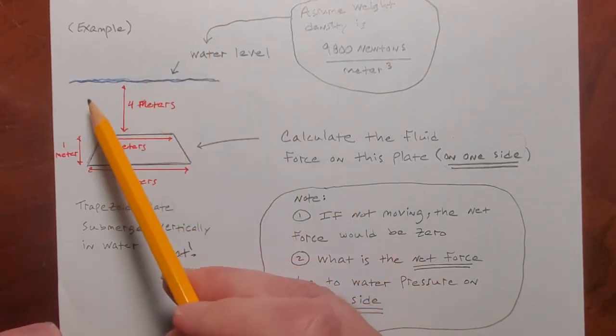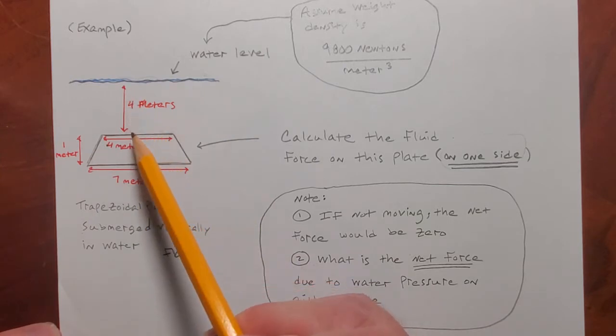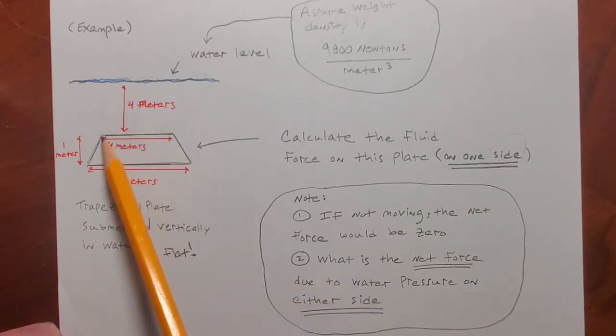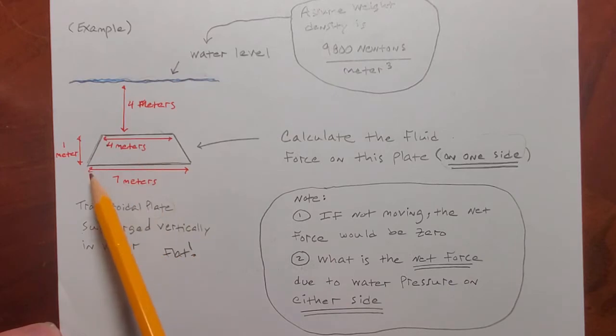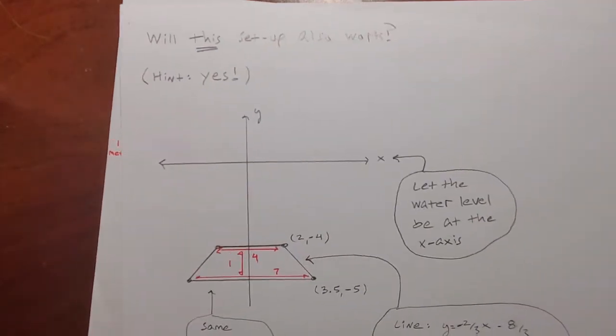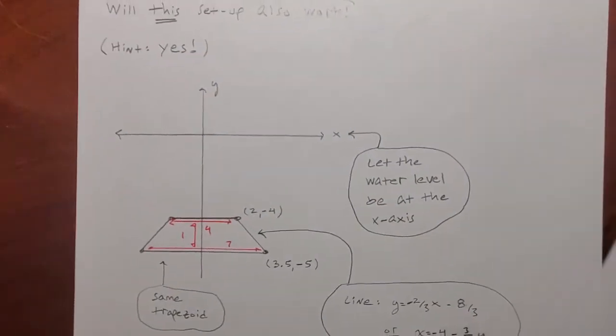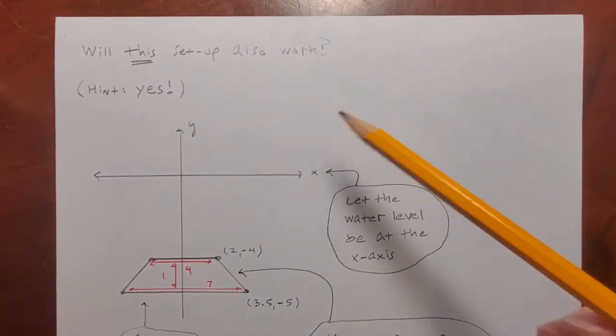Okay. So think again about this. There's the water level. The plate is 4 meters below it, but the plate itself is a top width of 4 meters, bottom of 7 meters, and a height of 1 meter. I could have put the y-axis on that like this.